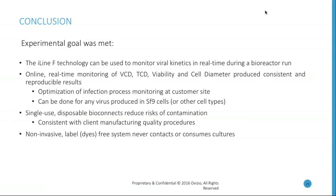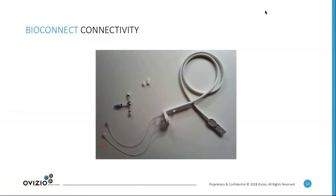The BioConnect — the single-use disposable sampling probe — heavily reduces the risk of contamination, consistent with client manufacturing quality procedures. We use a non-invasive, label-free and dye-free system that never comes in contact with or consumes any of the culture or cells. We have also upgraded our BioConnect, and as of now we can connect our sampling probe to any type of bioreactor using luer locks or C-flex weldable tubing, meaning there is no limitation on the bioreactor type.